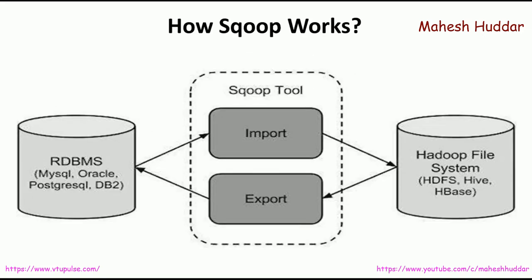This is the pictorial representation of how Sqoop works. Sqoop has two main tools: one is called import and another is called export. The import tool is used to import RDBMS data into the Hadoop file system, and export is used to export data from the Hadoop file system to RDBMS storage. RDBMS can be MySQL, Oracle, PostgreSQL, or DB2. The Hadoop file system may be HDFS, Hive, HBase, and so on.